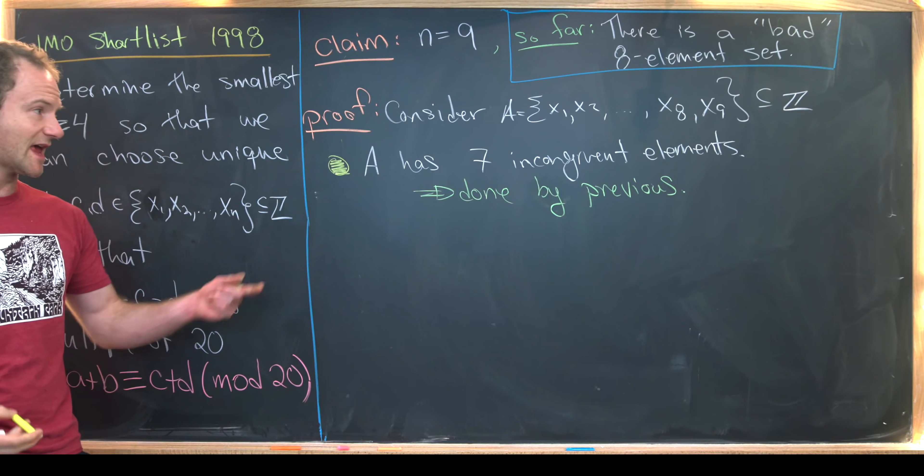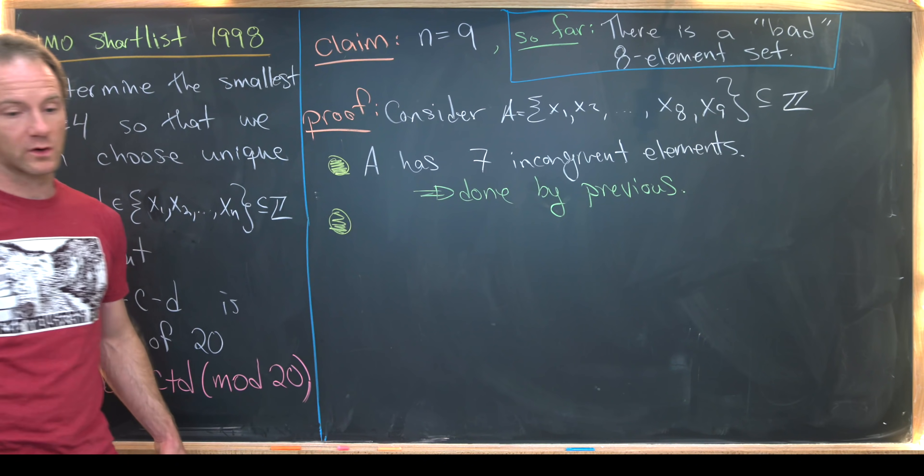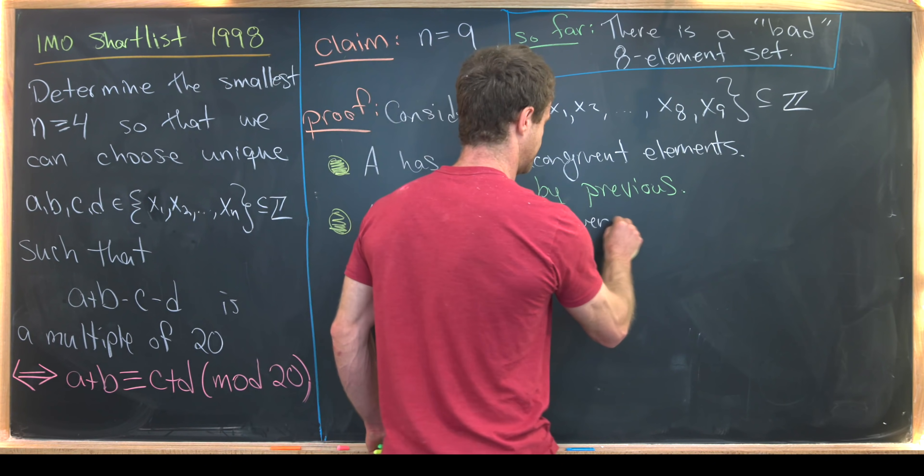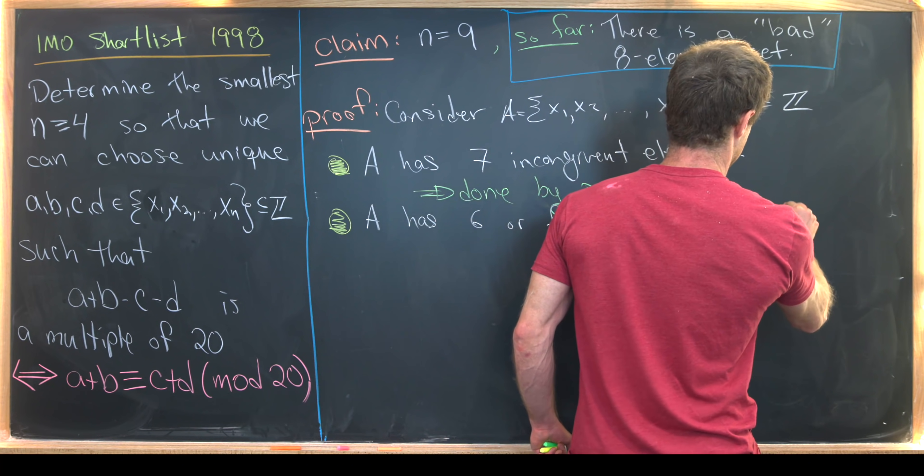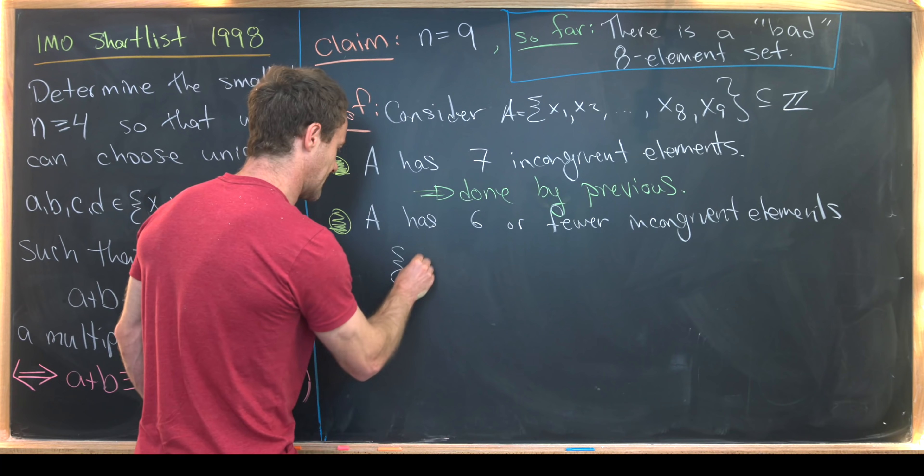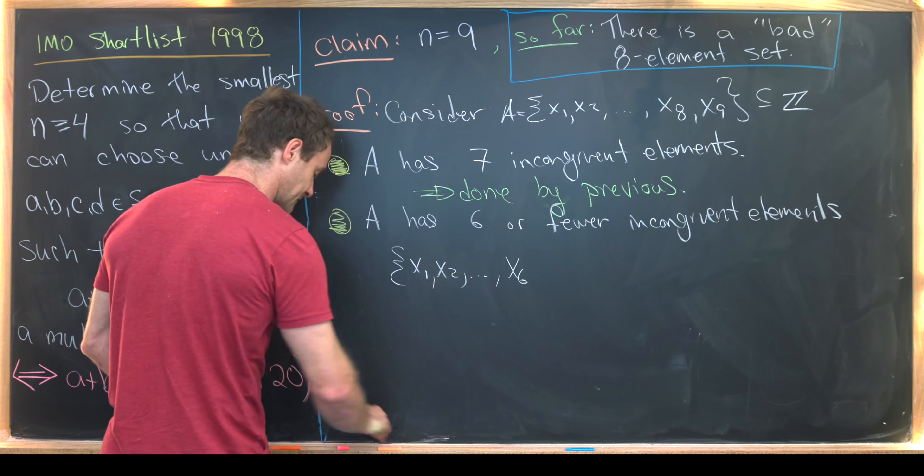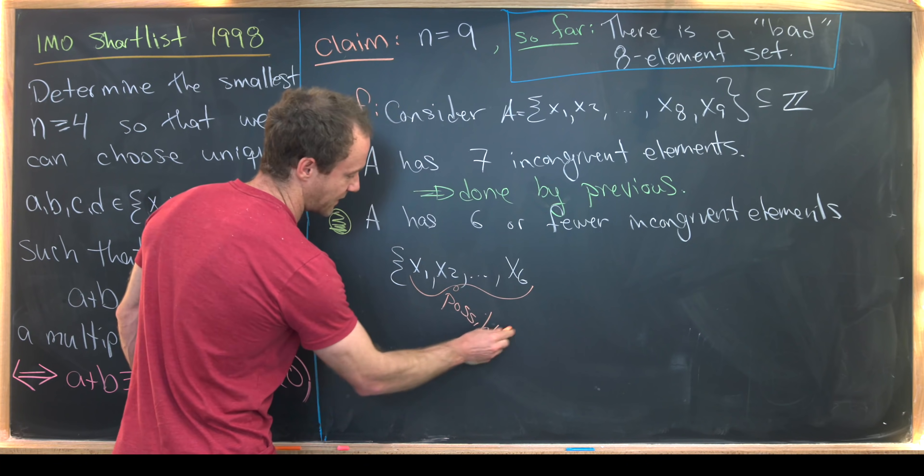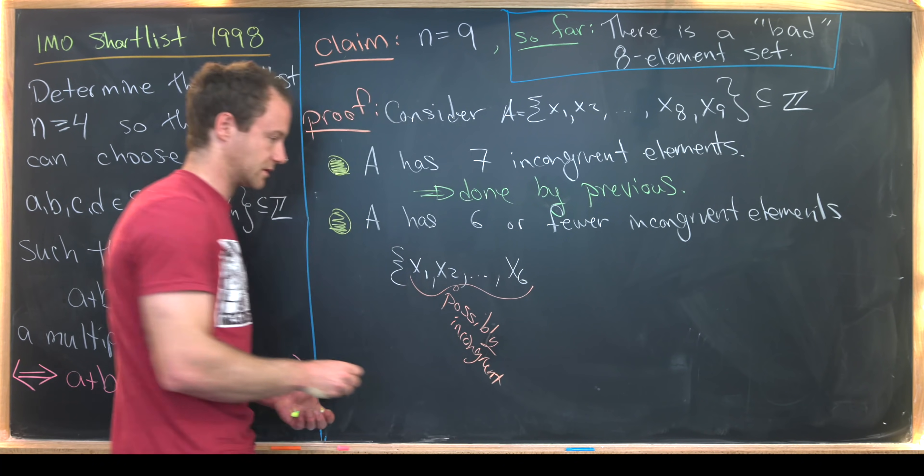So let's instead assume that a has six or fewer incongruent elements. So a has six or fewer incongruent elements. So let's list them in the following order. Let's say x1, x2, all the way up to x6 are possibly incongruent. They're not definitely incongruent, but they're possibly incongruent.